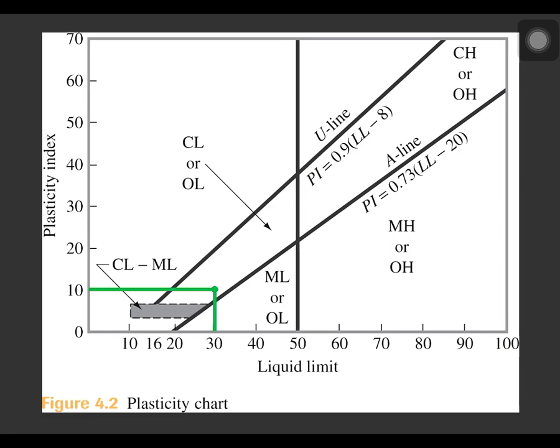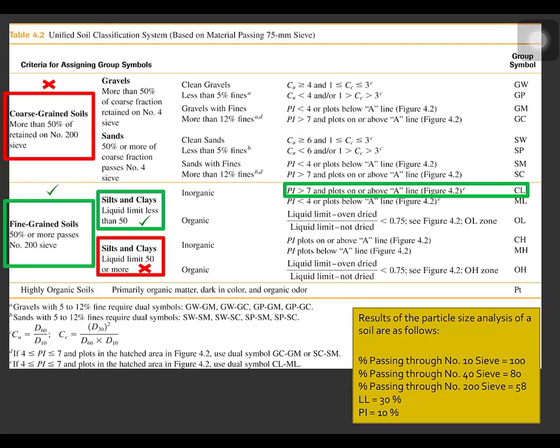The liquid limit is equal to 30 and the plasticity index is equal to 10. Since the plot is plotted above the A line, it satisfies the condition. So, it is either a CL or OL. So, for this problem, the group symbol is CL.